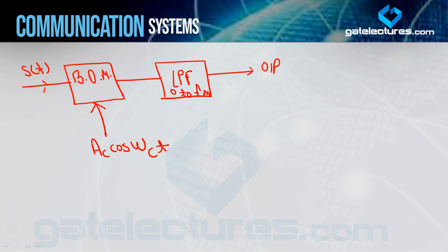Because the output is your message signal, and the maximum frequency of the message signal is FM. Now, the role of the balanced demodulator — just understand it as a multiplier. Whatever inputs are given to it, it simply multiplies them; that is its only role. So I will consider the output of the balanced demodulator as V1.